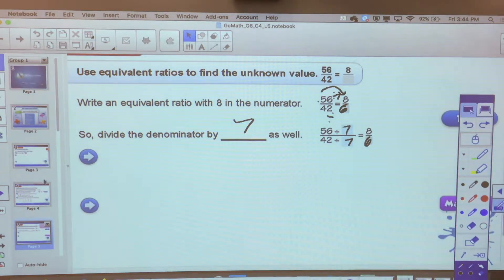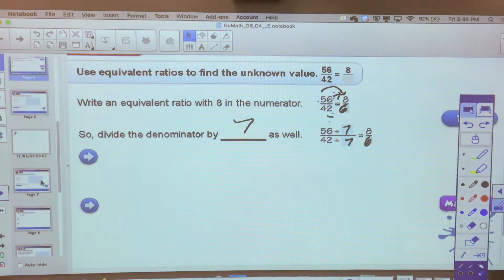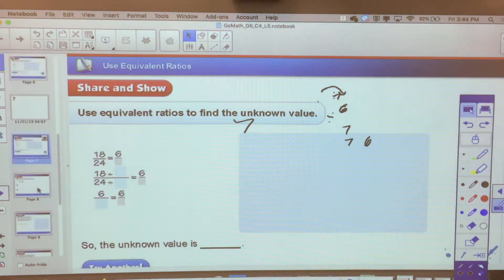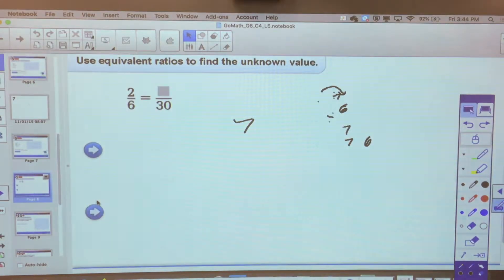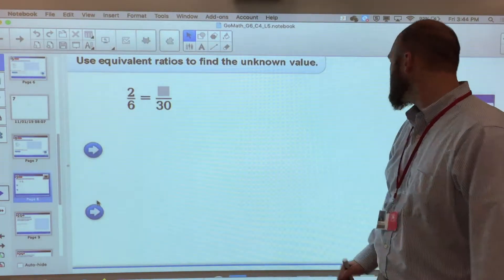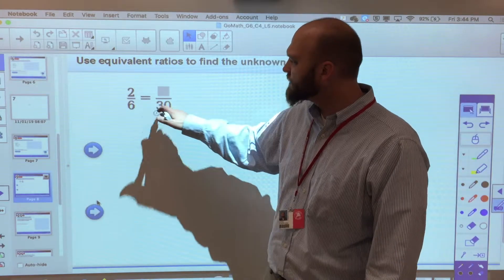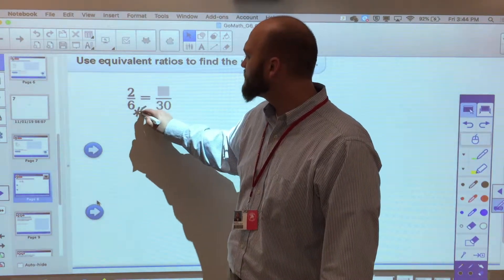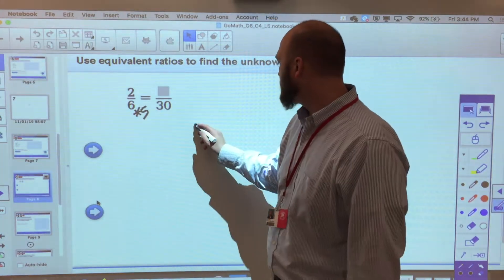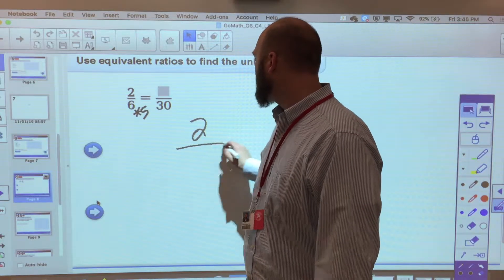So if I were to move this into another example, let's say this one. 2 6ths equals how many 30ths? So I simplify here. How do I go from 6 to 30? I'm going to multiply by 5. Now I could also set this out as a rate table.